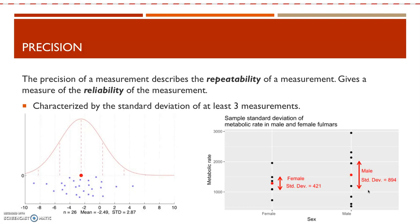You can also measure precision using the standard deviation of at least three measurements. Here there's a diagram of sample standard deviation for metabolic rate in male and female fulmars, with multiple measurements and a red dot indicating the average. The arrows represent the standard deviation, which tells you about the spread in the data points. The standard deviation for females is much smaller because those data points are closer together, while for males the spread is about twice as wide.